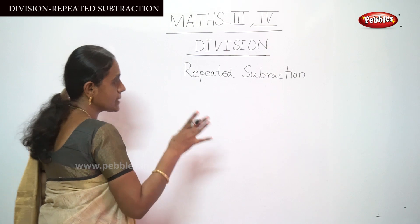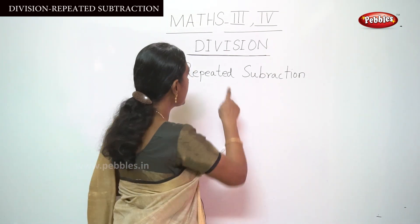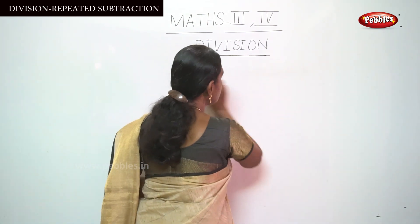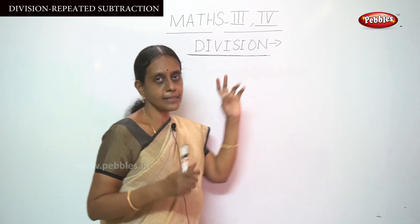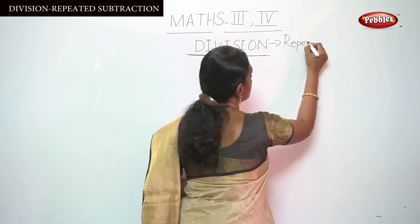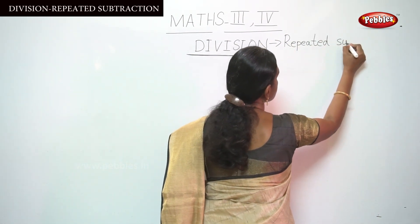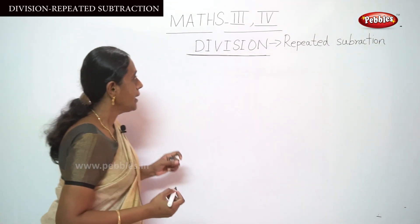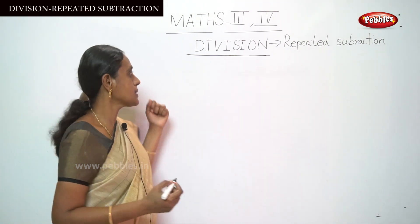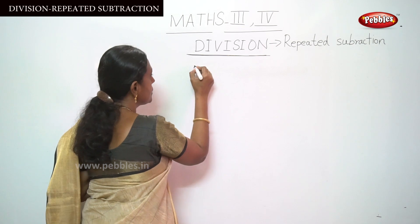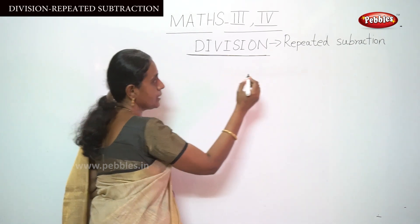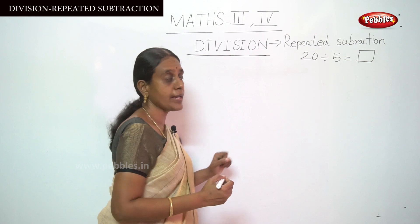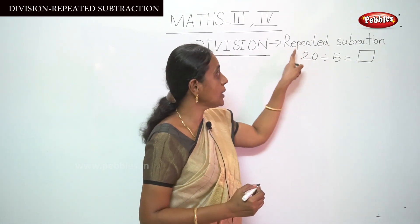Let me show you with an example sum. I am going to write this repeated subtraction here. Division is repeated subtraction. I am writing the term repeated subtraction and I am going to explain with an example sum. That is 20.